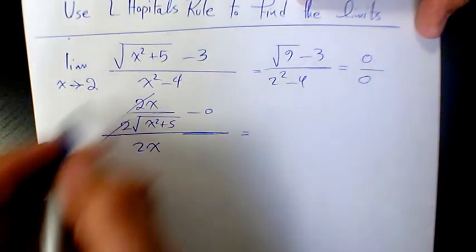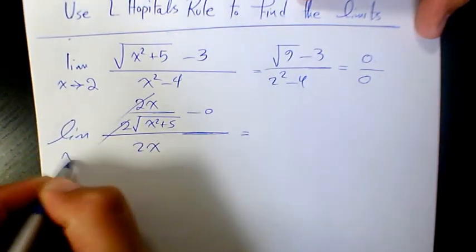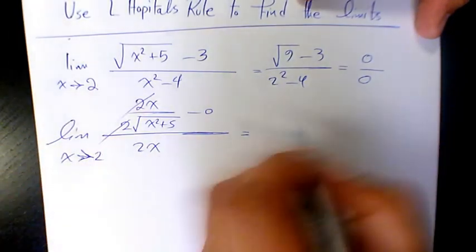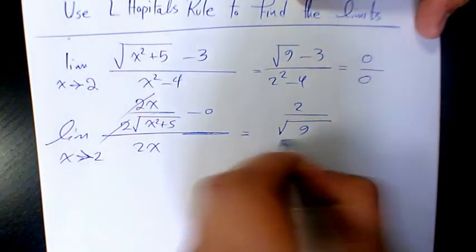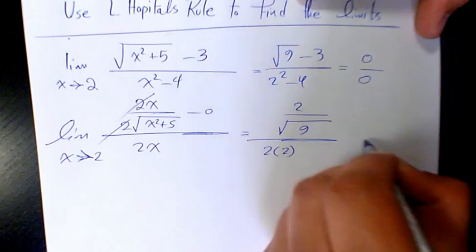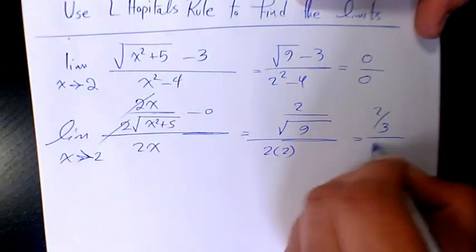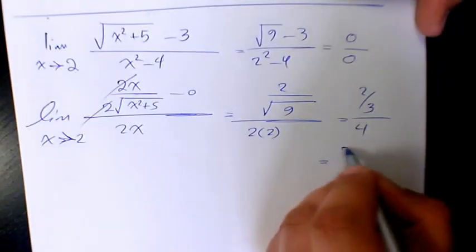When the limit as x goes to two, it's going to be two over root nine, over two times two. That's going to be two over three over four, and that will be two over